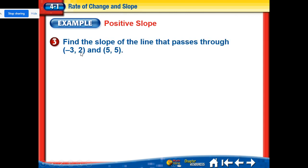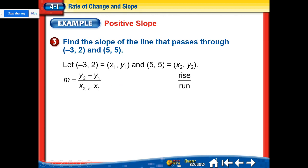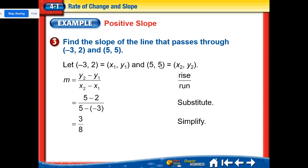Let's try a positive slope example with points (-3, 2) and (5, 5). We label (-3, 2) as x1, y1 and (5, 5) as x2, y2. Using the formula: y2 minus y1 over x2 minus x1 gives us five minus two over five minus negative three. That's three over eight — so to get from one point to the other, we go up three and over eight. It's positive, so it's an uphill line.